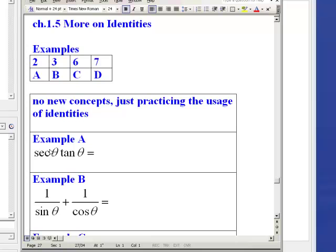Welcome to this section on More Identities. Since there are no new concepts in this section, we'll just do a few examples. It's about taking trig functions and substituting for them with basic trig functions. In this case, they ask us to write secant theta times tangent theta in terms of sine and cosine, which are the two basic trig functions.